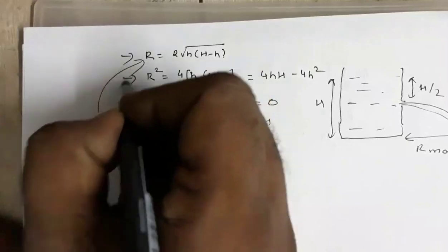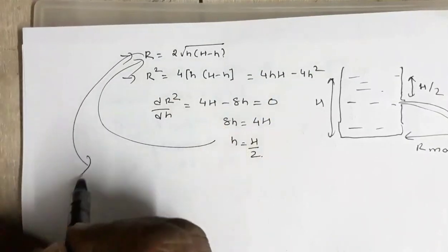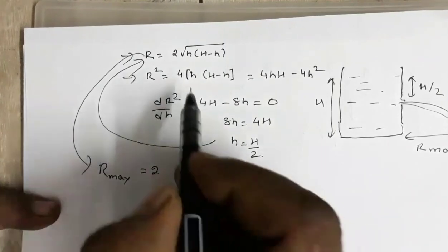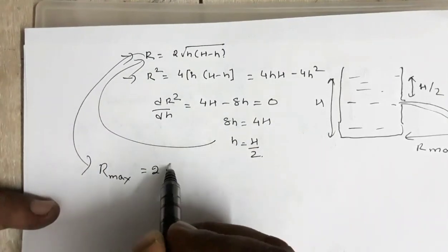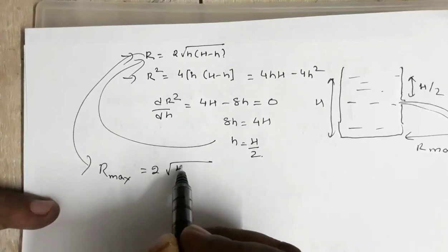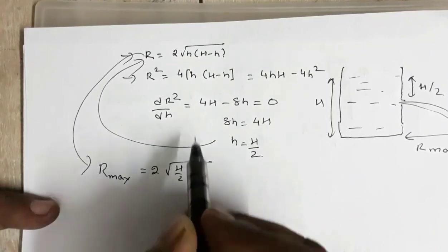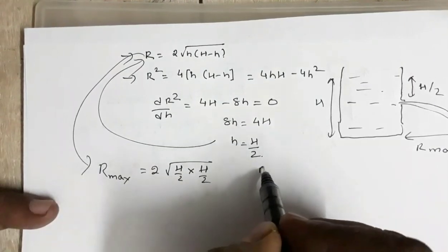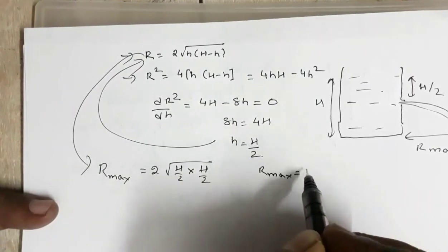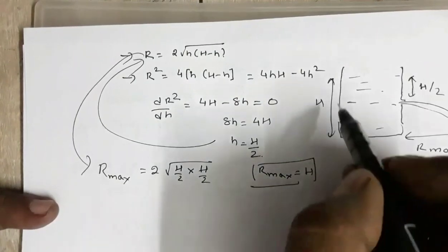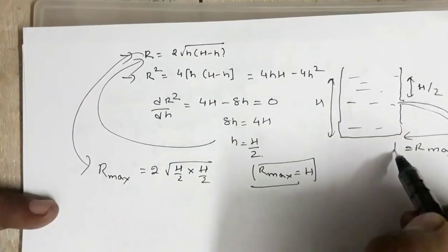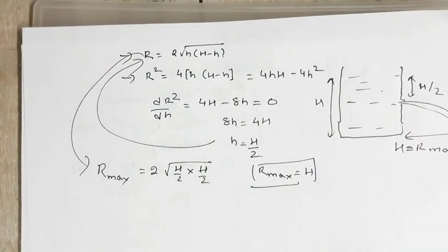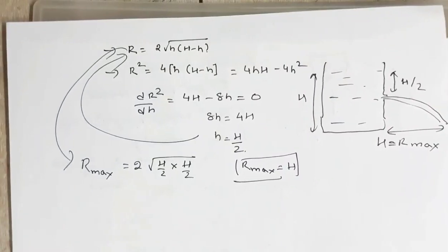The maximum range: substituting h equals H/2 into the range formula gives R_max equals 2 times the square root of (H/2)(H minus H/2) equals 2 times the square root of (H/2)(H/2) equals capital H. So the maximum range equals the total height of the water level.